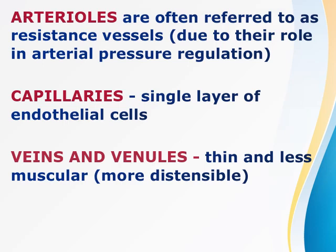Arterioles are small arteries often referred to as resistance vessels because they have a role in arterial pressure regulation. Capillaries are considered a single layer of endothelial cells where the exchange of oxygenated blood with waste products and carbon dioxide takes place. Veins and venules have thinner and less muscular walls compared to arteries, making veins more dispensable.